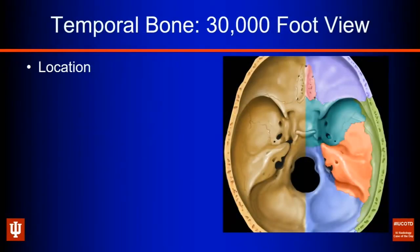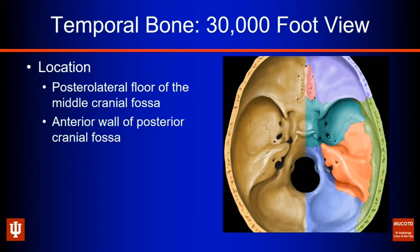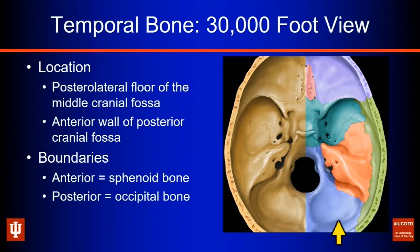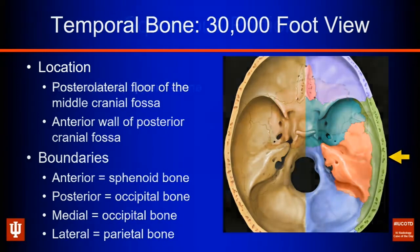I think it's best to start with an overview, the 3,000-foot view of the temporal bone. It's important to keep in mind its location. This makes up the posterolateral floor of the middle cranial fossa — the temporal bone in red — and the anterior wall of the posterior cranial fossa. Looking at its boundaries, anteriorly we see the sphenoid bone, posteriorly and medially the occipital bone, and laterally the parietal bone housing that temporal bone.